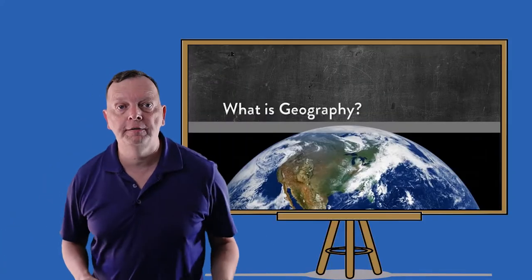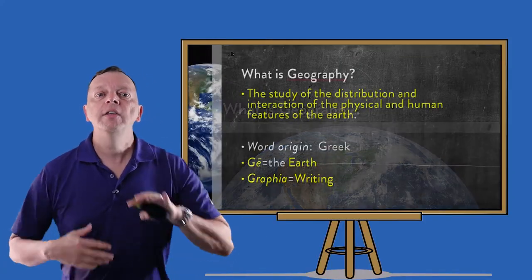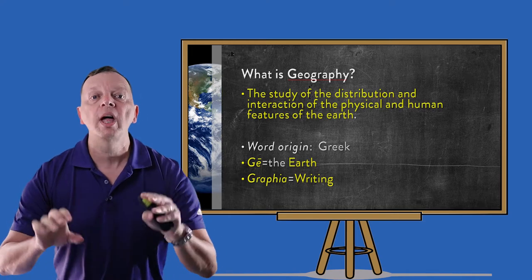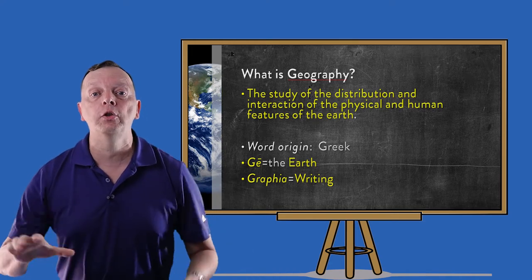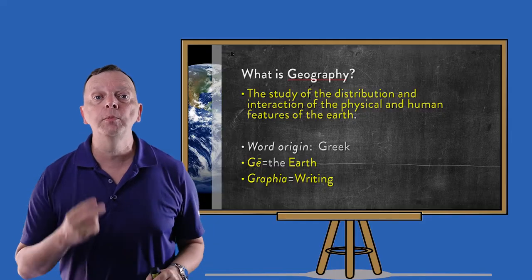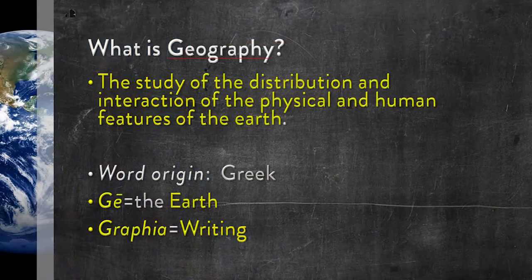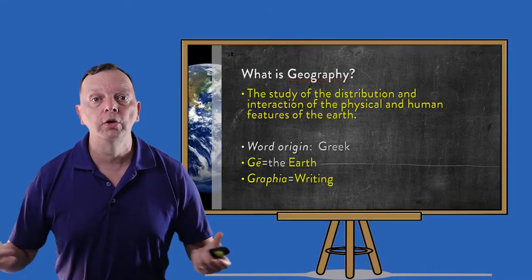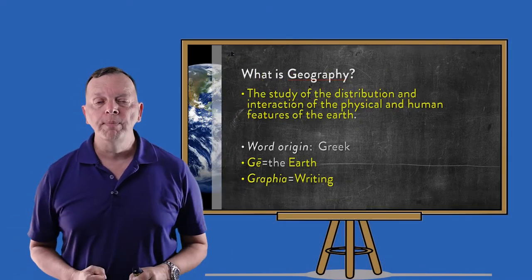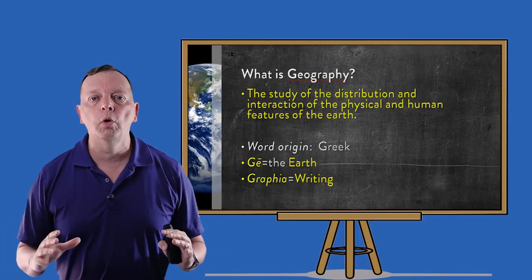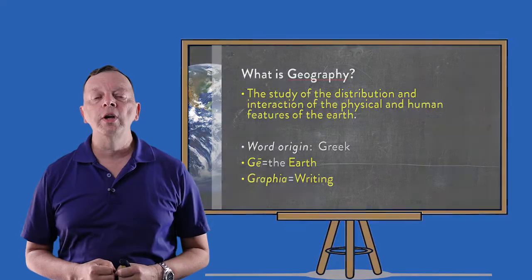So what is geography? Well, geography is the study of the distribution — that's how things are arranged — and the interaction of physical and human features of the earth. The word geography comes from two Greek words, ge and graphea. Ge or geo actually means earth, and graphea means to write or to draw, or in other words, to describe. So put together, geography literally is the describing of the world, and that's what we're going to be doing in this course.